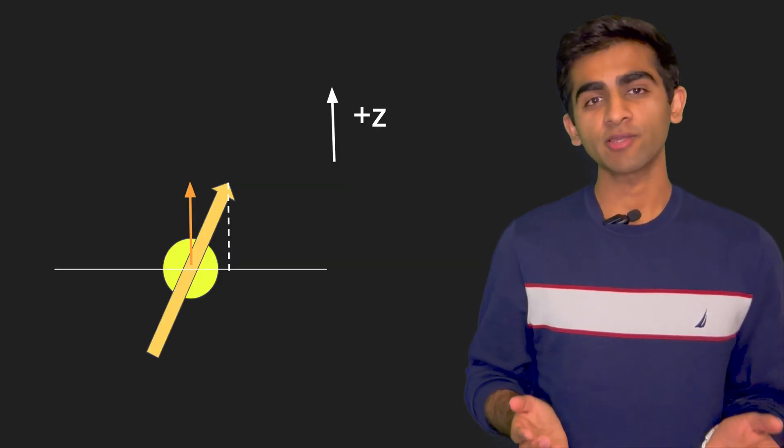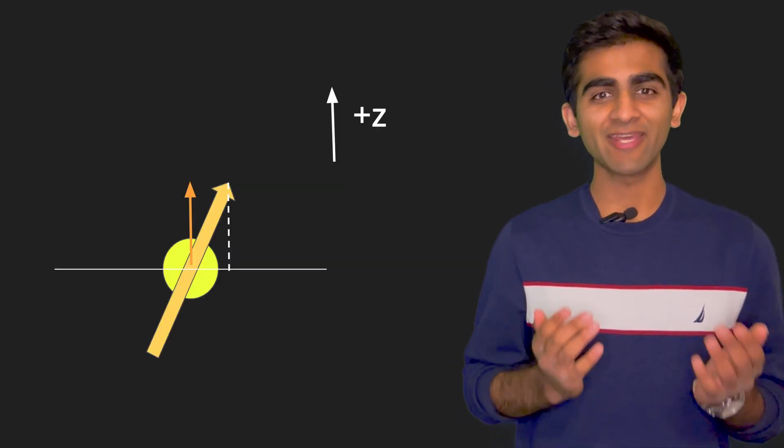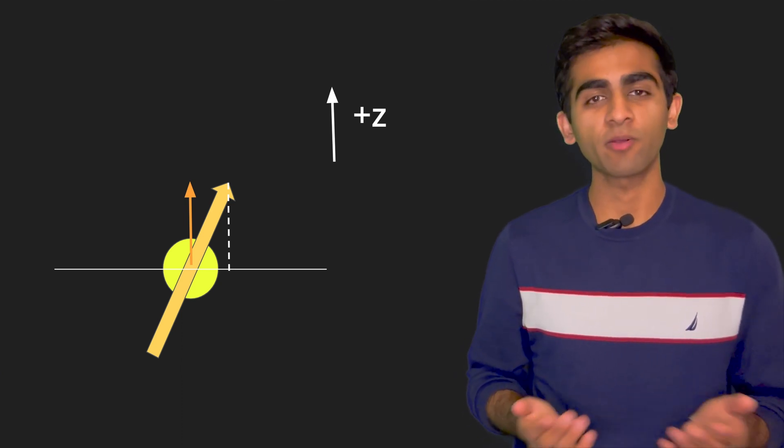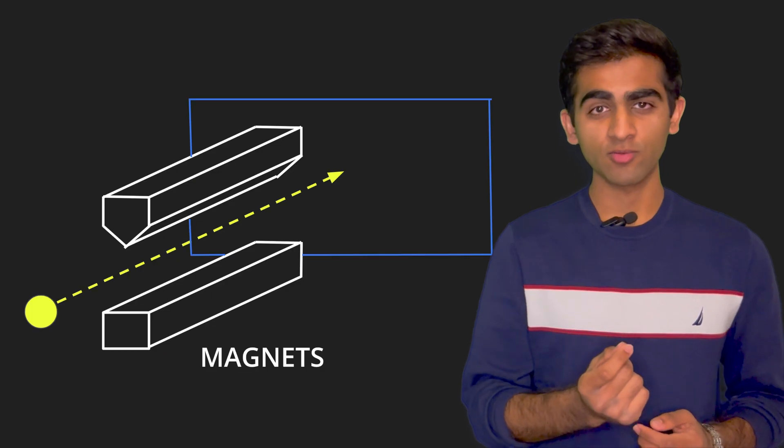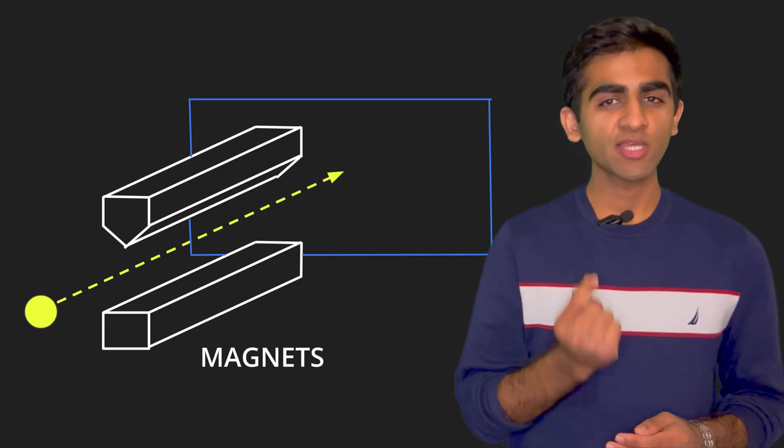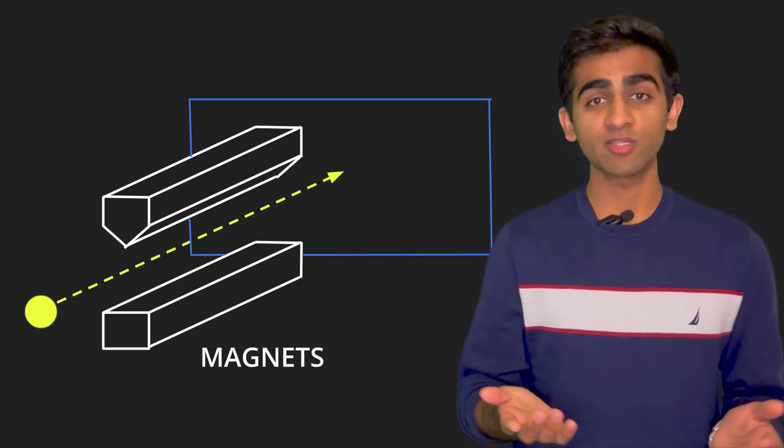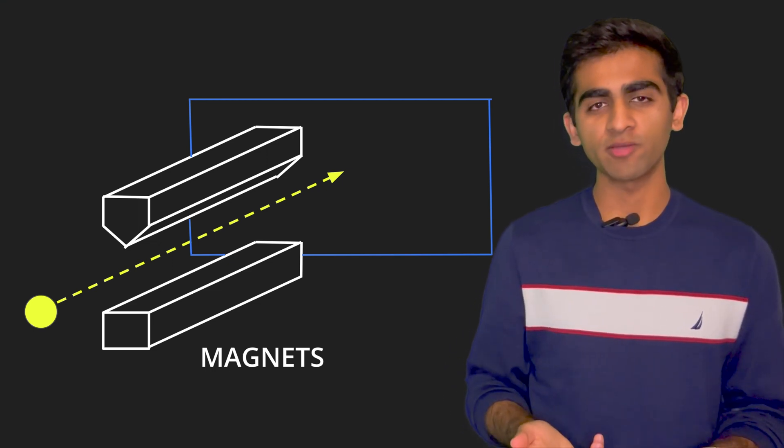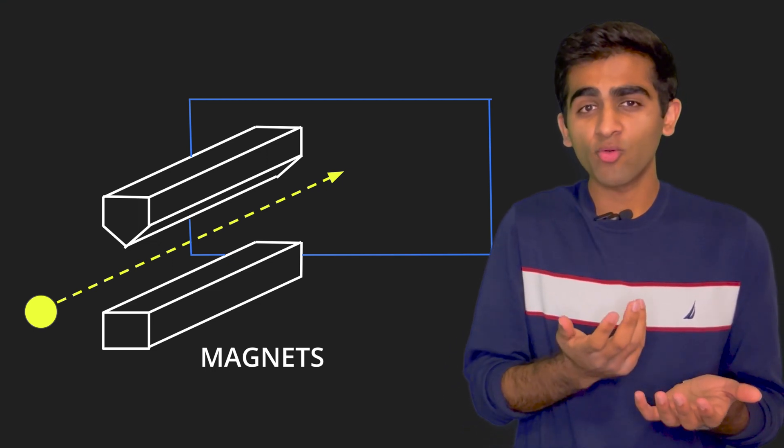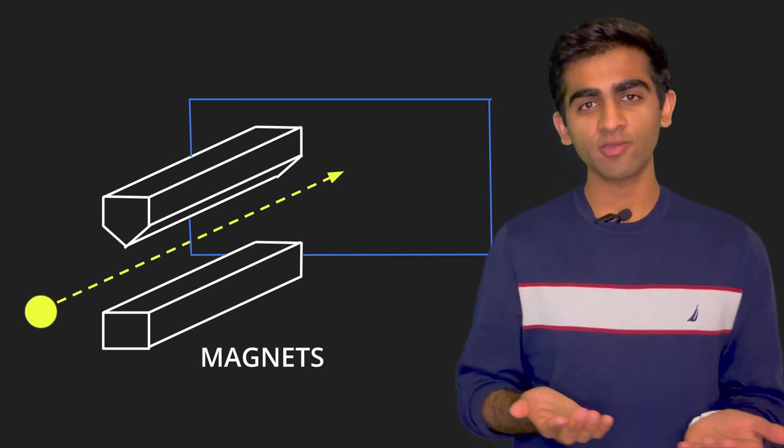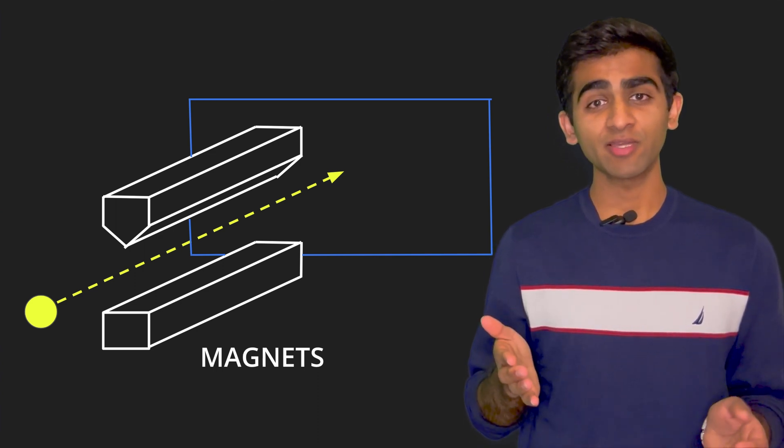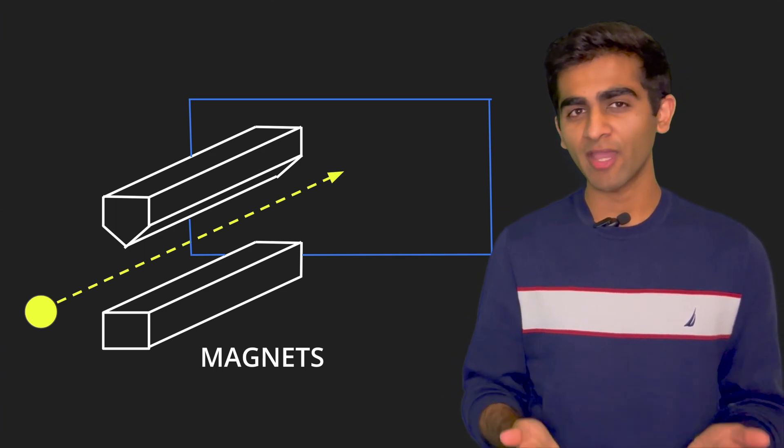A Stern-Gerlach experiment is a way of detecting the intrinsic angular momentum or spin of a particle. Here's how it goes. We take a particle with some spin and we send it through a magnetic field. This magnetic field is generated by two magnets, one on top and one on the bottom. And depending on the orientation of the spin of this particle, it's deflected by a certain angle and the deflection is detected on a screen behind these magnets.